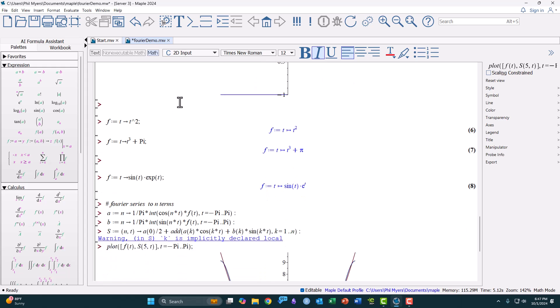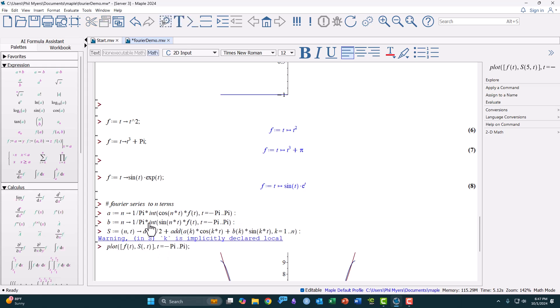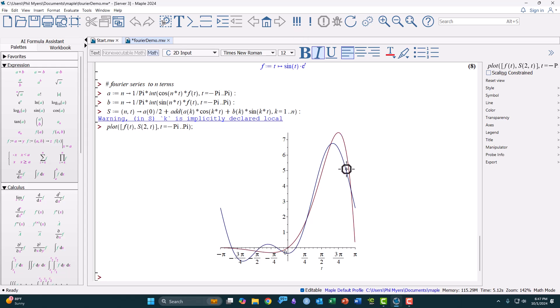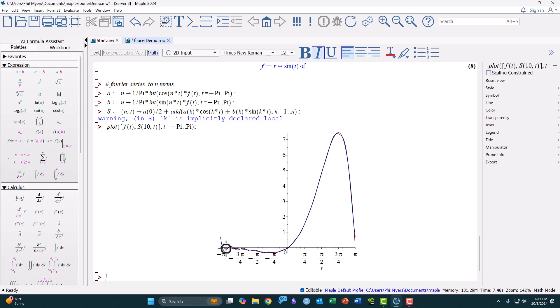Now I want to try something a little bit more exotic. How about sine of t times the exponential of t. So I'll input this function, and then run it with, let me try two terms. And you can see it's starting to approximate. It's not great, but it's okay. I'll bump this up to 10 and run it again. And you can see it's becoming quite good. Again, at the endpoints, it's not so great.